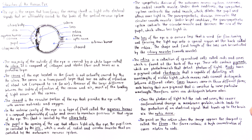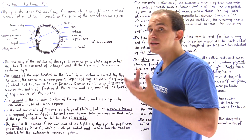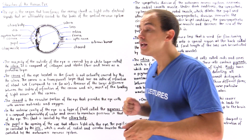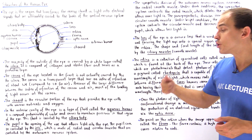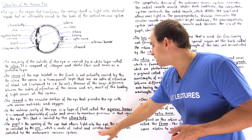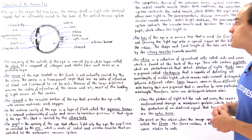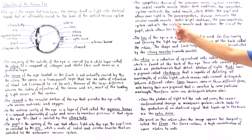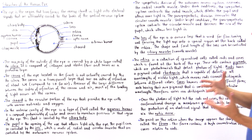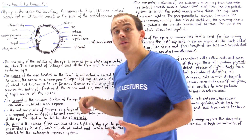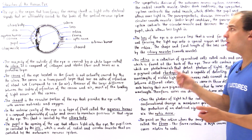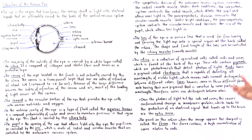On the other hand, if we are in a room that contains lots of light, our parasympathetic nervous system innervates the circular muscles of our iris. The circular muscles contract, which decreases the size of the pupil — decreasing the size of the opening and allowing less light inside our eye.